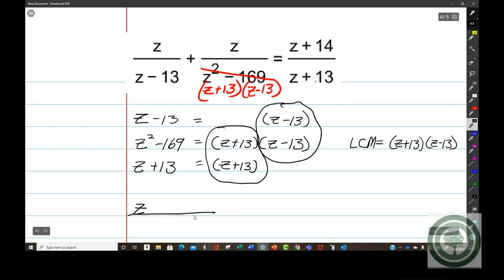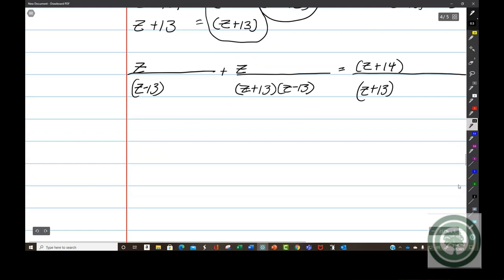We're going to have z over z minus 13 plus z over z plus 13 z minus 13 equals z plus 14 over z plus 13. I had to be able to see the original. My next move is to multiply each term by the LCM.